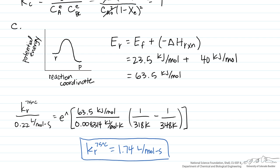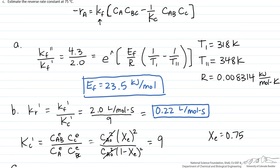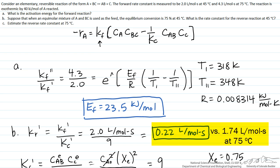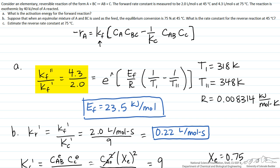As a good check, we notice that the reverse rate constant increases by roughly a factor of 8 as we raise the temperature by 30°C, whereas the forward rate constant only slightly more than doubles over the same interval. This makes sense because the reverse reaction has a higher activation energy and becomes increasingly favored at higher temperatures. This is also consistent with the equilibrium picture: KC for this exothermic reaction should decrease with increasing temperature, shifting equilibrium toward the reverse reaction.